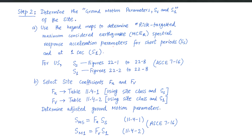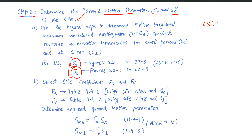Once you establish the risk category, step two is to determine the ground motion parameters Ss and S1 for your site. These Ss and S1 parameters are taken from the hazard maps in ASCE 7-16, which give us the values for short-period spectral acceleration and long-period spectral acceleration. From ASCE 7-10 onwards, they are defined as Risk-Targeted Maximum Considered Earthquake (MCEr) spectral response acceleration parameters — Ss for short period and S1 for one second. So from ASCE 7-10 onwards we have MCEr values for Ss and S1.